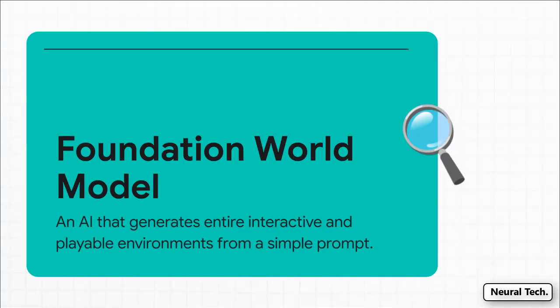The term Google is using is a foundation world model, and you really got to chew on that for a second. We're all familiar with large language models and diffusion models for images — but this is something else entirely. A world model doesn't just spit out static content; it generates a whole system complete with its own rules. It's like an AI that has learned to be its own game engine and its own physics engine just by watching videos.